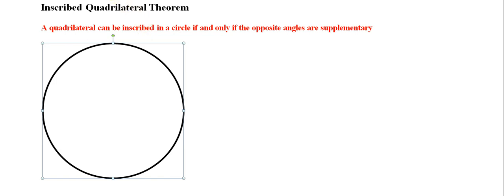Hello geometers and seekers of general truths. In this video we will discuss and prove the inscribed quadrilateral theorem, which states the following: a quadrilateral can be inscribed in a circle if and only if the opposite angles are supplementary.